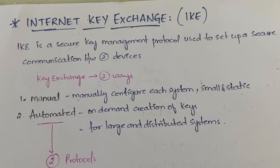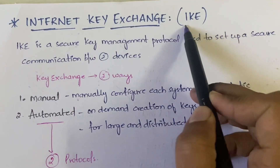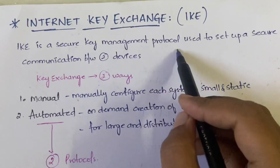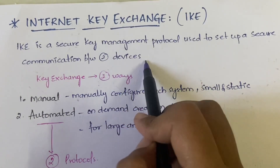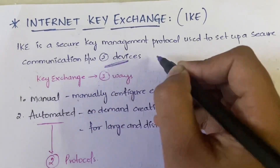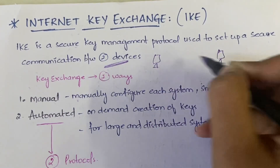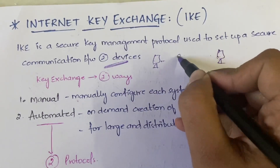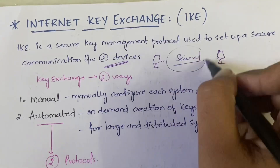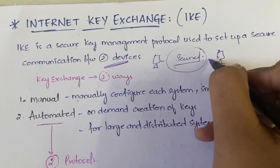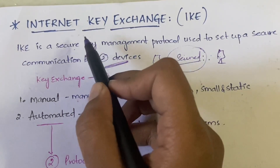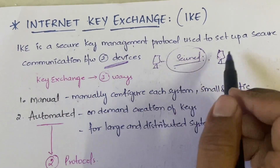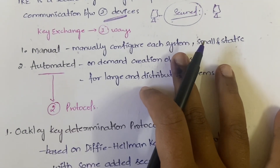IKE — Internet Key Exchange — in short we write it as IKE. IKE is a secured key management protocol used to set up secured communication between two devices. When two devices, Host A and Host B, are communicating with each other, the communication has to be secured so that information is not leaked. In order to manage and exchange those keys between sender and receiver, we use Internet Key Exchange.